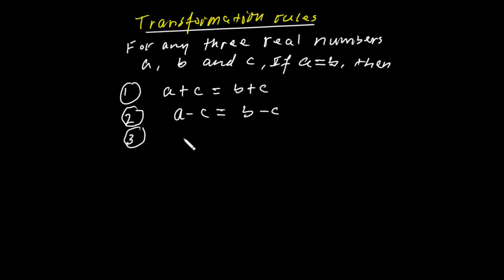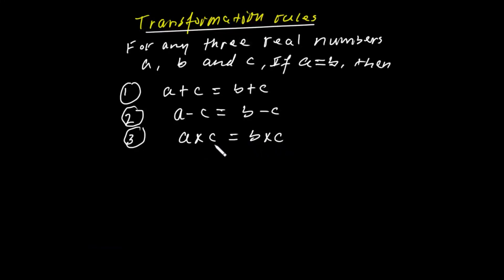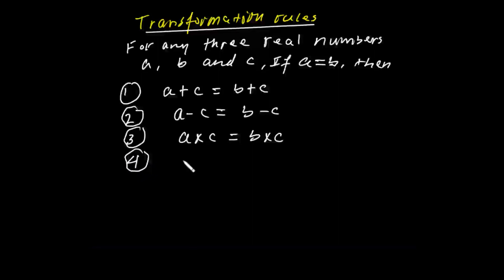A times C is equal to B times C. The equation remains unchanged. And the division rule of transformation: A divided by C is equal to B divided by C, whenever C is not zero.